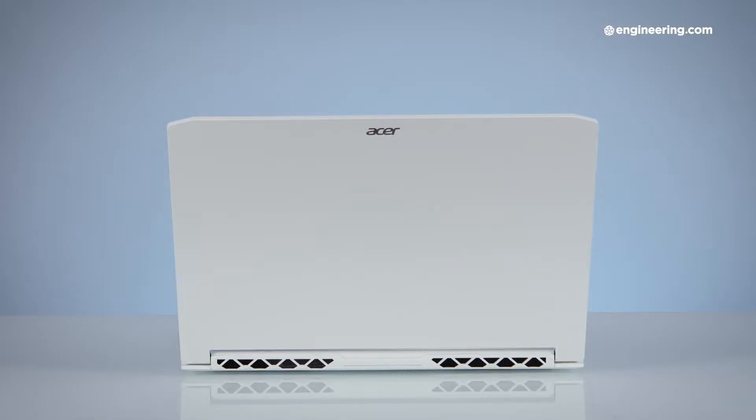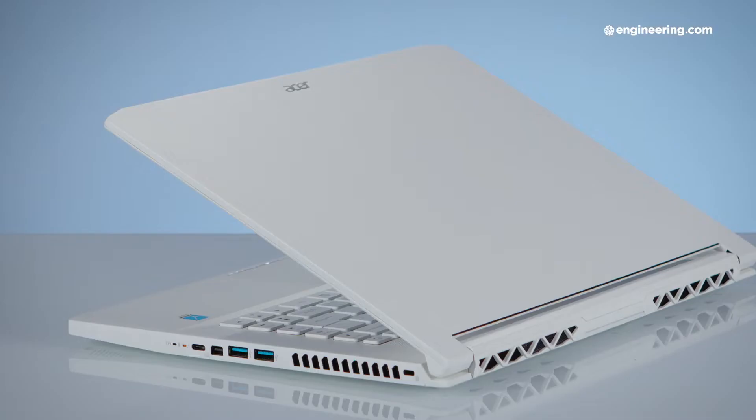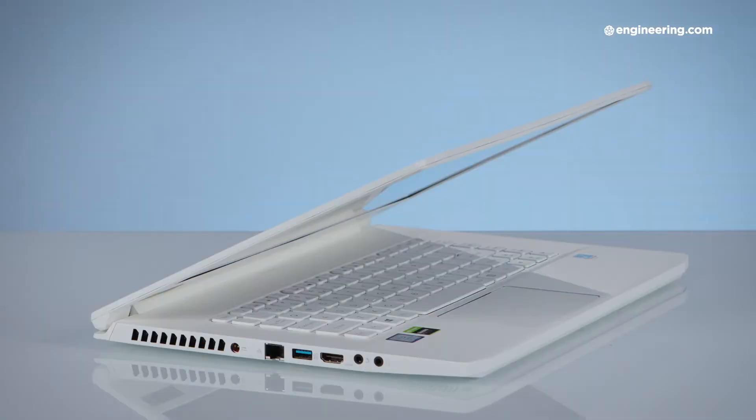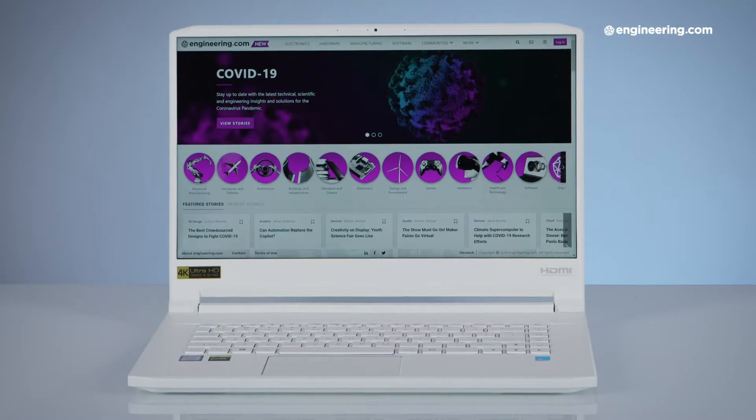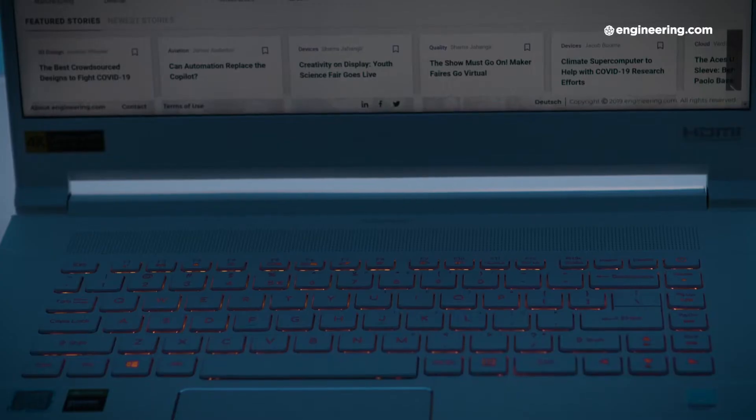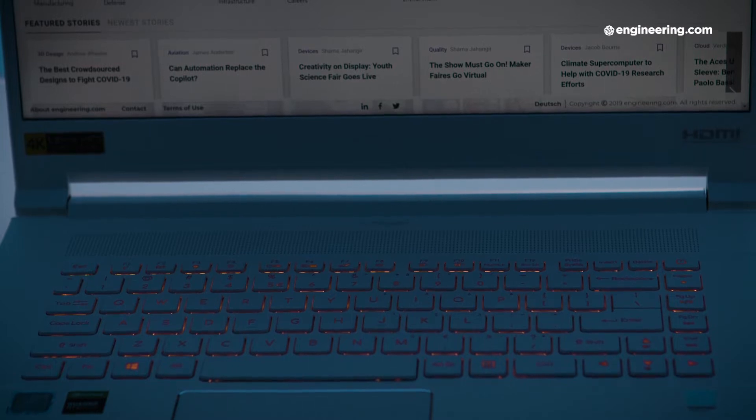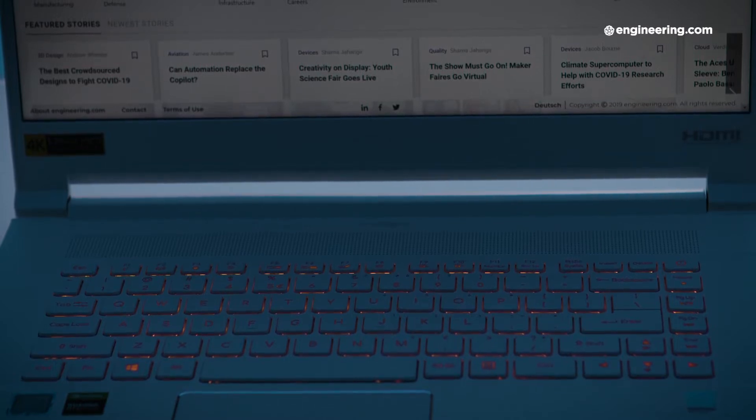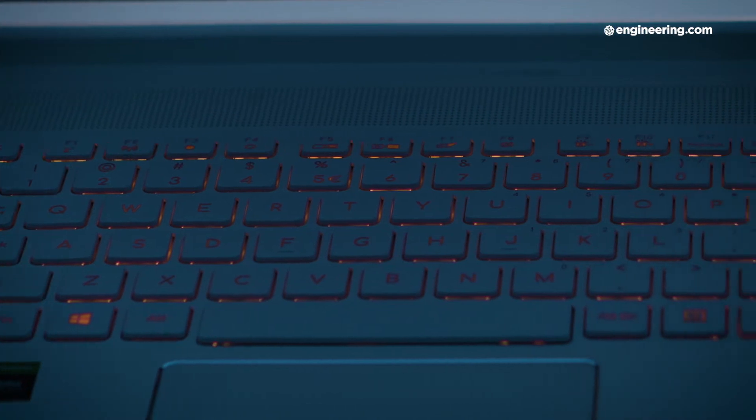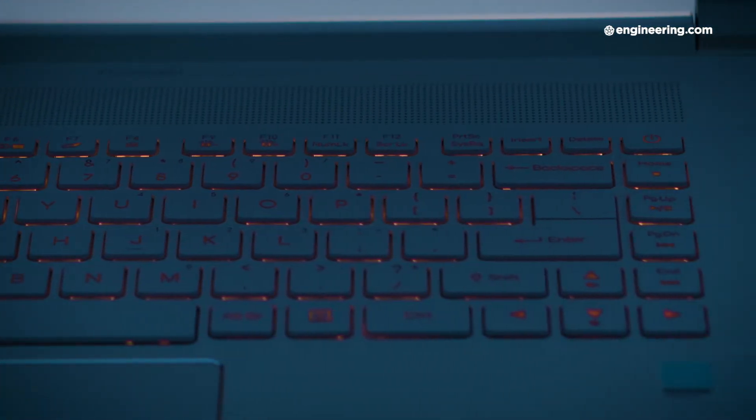As you can see, the Acer ConceptD 7 Pro has this interesting design, it's this completely bone white chassis, which makes it stand out in the field of matte black mobile workstations that we typically look at. I'm not personally a huge fan of the aesthetic, but I appreciate Acer doing something different. To complement the bone white chassis, it's got an interesting backlight. The keyboard is backlit with this sort of orange glow, which overall makes the thing look unique.